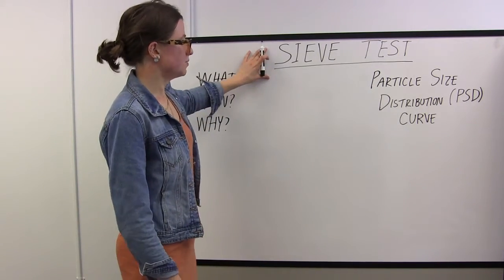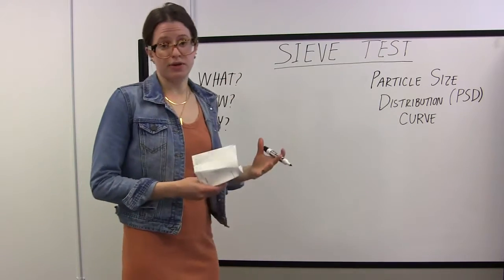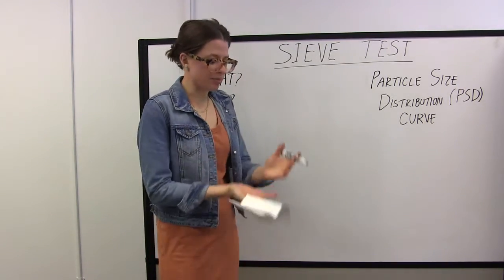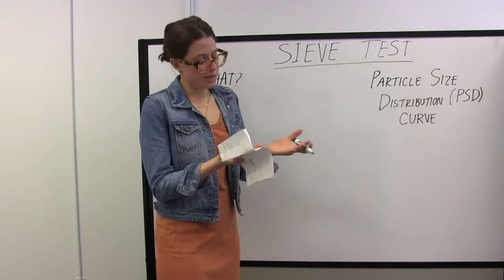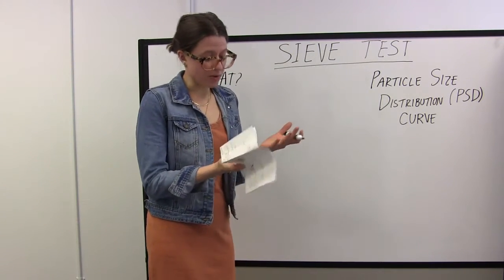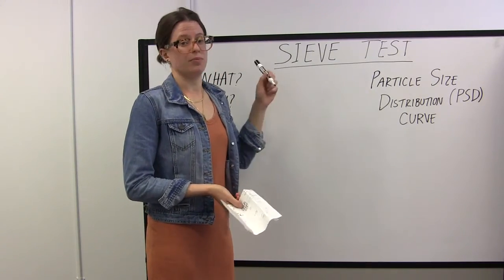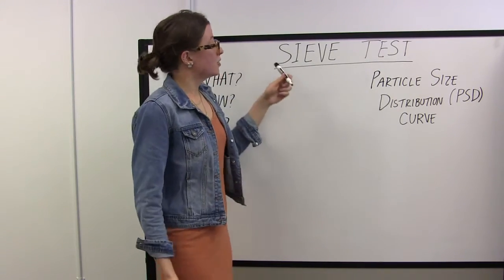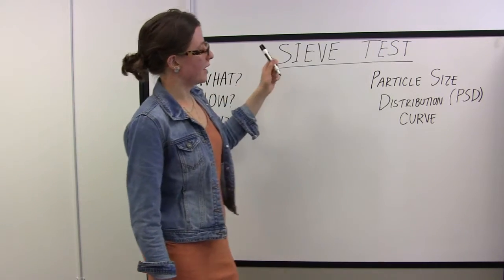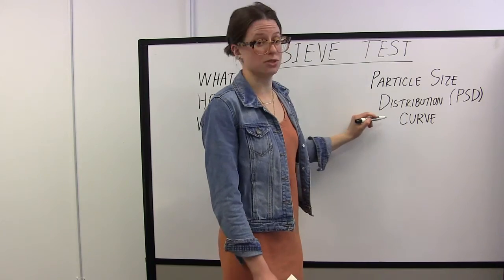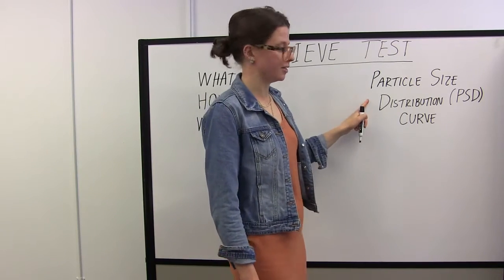A sieve test helps classify a soil at your site. Say you go to a construction site, you grab a scoop full of the soil at the site, and you take a look at it and you say, do I have a gravel, do I have a sand, do I have a clay, etc. The sieve test is the first step to help answer that question for you. The way it helps answer that is that after running a sieve test you generate what's known as a particle size distribution curve. We'll get to that at the end.